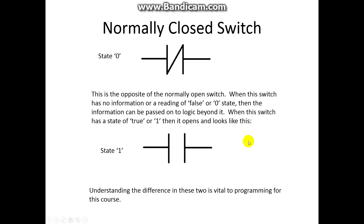Information can pass through this gate and go on to any other logic that we have. The next thing we have is called a normally closed switch. In state zero, a normally closed switch will always allow information to pass. So if there's information that needs to get through here, no problem at all. However, when we push a button or some other thing becomes true somewhere else, then this changes to an open state and no information can pass.